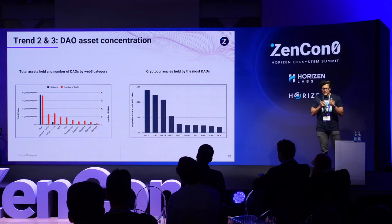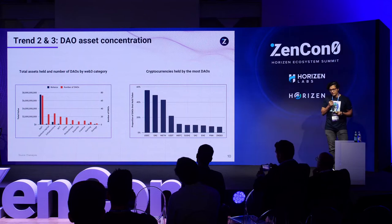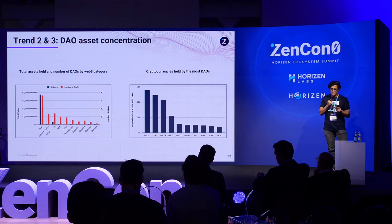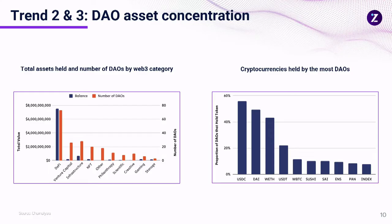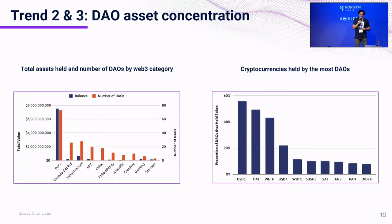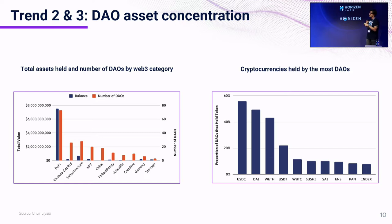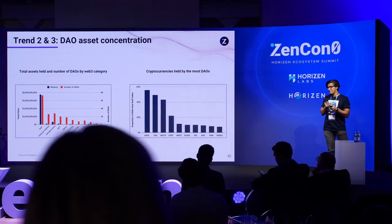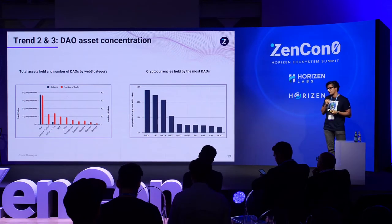So the DAO asset concentration. This is an interesting trend where we're starting to see a number of DAO categories have started to accumulate a large number of assets. By category division, you're seeing DeFi, venture capital, infrastructure, and NFT or collectibles DAOs are the ones where there's a lot of assets getting accumulated — meaning there's a lot of projects and community support behind them. What you're seeing on the right is what assets are held by these DAOs: USDC is clearly the leader, followed by DAI and then Ethereum. So there's a clear formation and concentration of assets, not only by DAO category but also by the cryptocurrencies being utilized within the space.